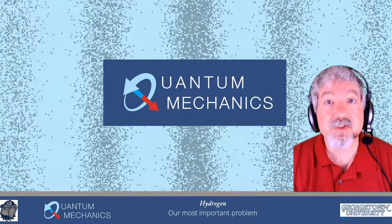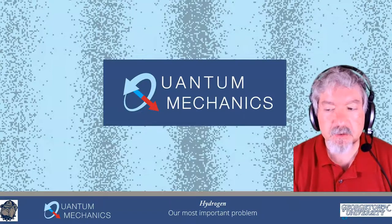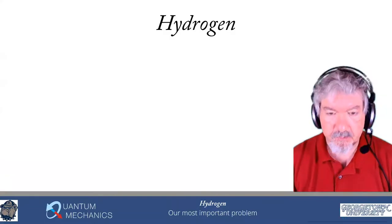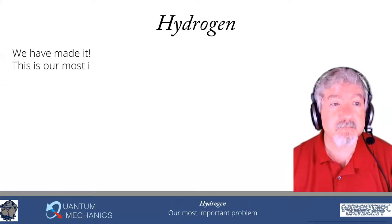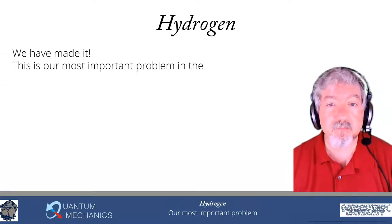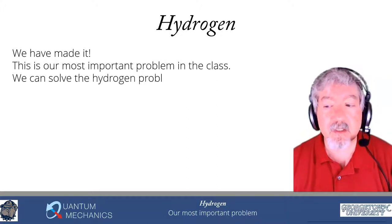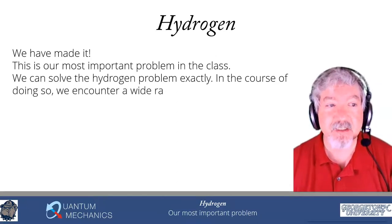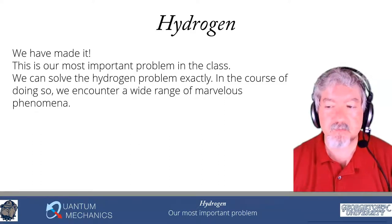Welcome to lecture eight of module seven. We've finally gotten to hydrogen. This is the single most important problem we're going to be studying in the entire class. Congratulations, we finally made it. We're going to solve for the quantum mechanics of hydrogen. This problem can be solved exactly, and in the course of doing so, we're going to encounter a wide range of very interesting and marvelous phenomena.